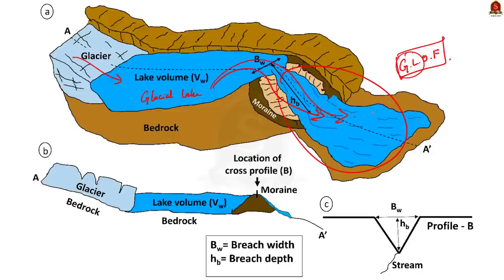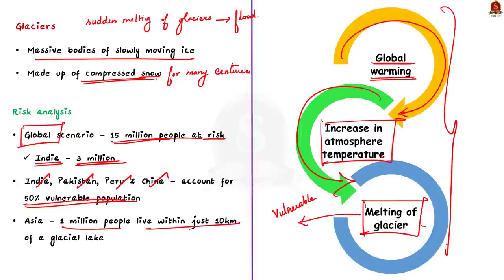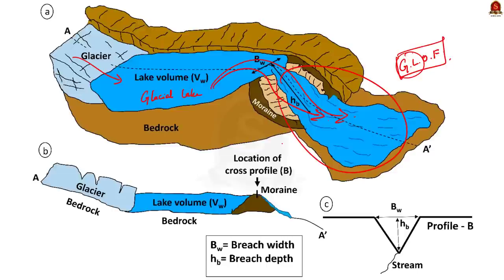The study estimates 15 million people to be at risk from glacial lake flooding, and out of this 15 million, nearly 3 million are from India. People in India, Pakistan, Peru, and China account for over half of those at risk. In Asia alone, nearly 1 million people live within just 10 kilometers of a glacial lake. The report suggests that policy measures need to be brought to safeguard this vulnerable population.